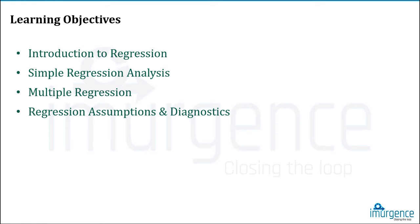When we talk about regression, it's basically a relationship between a dependent variable and one or more independent variables. It's a multivariate analysis technique. If the number of independent variables is one, it is called simple linear regression; if it's more than one, it is called multiple linear regression.